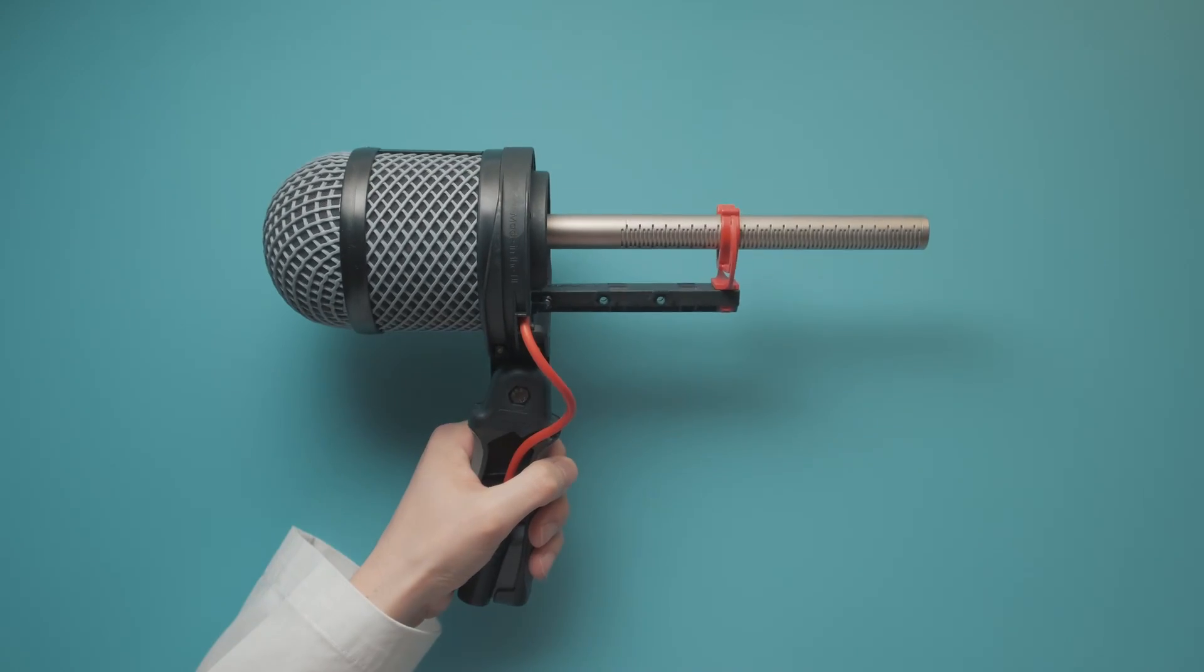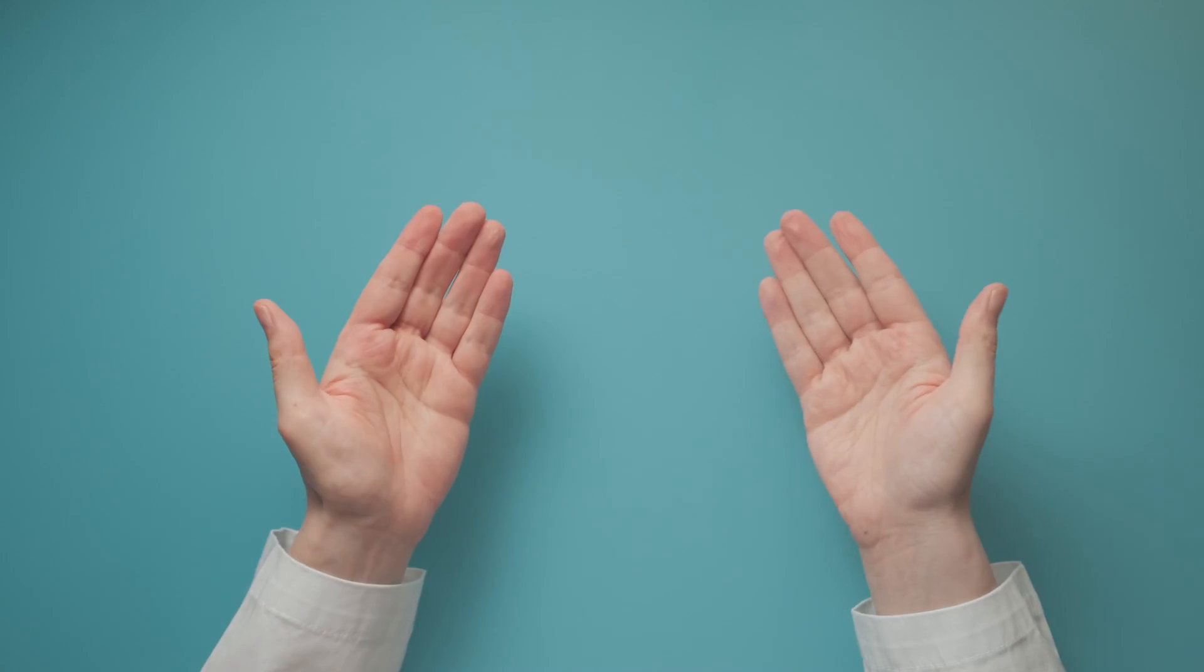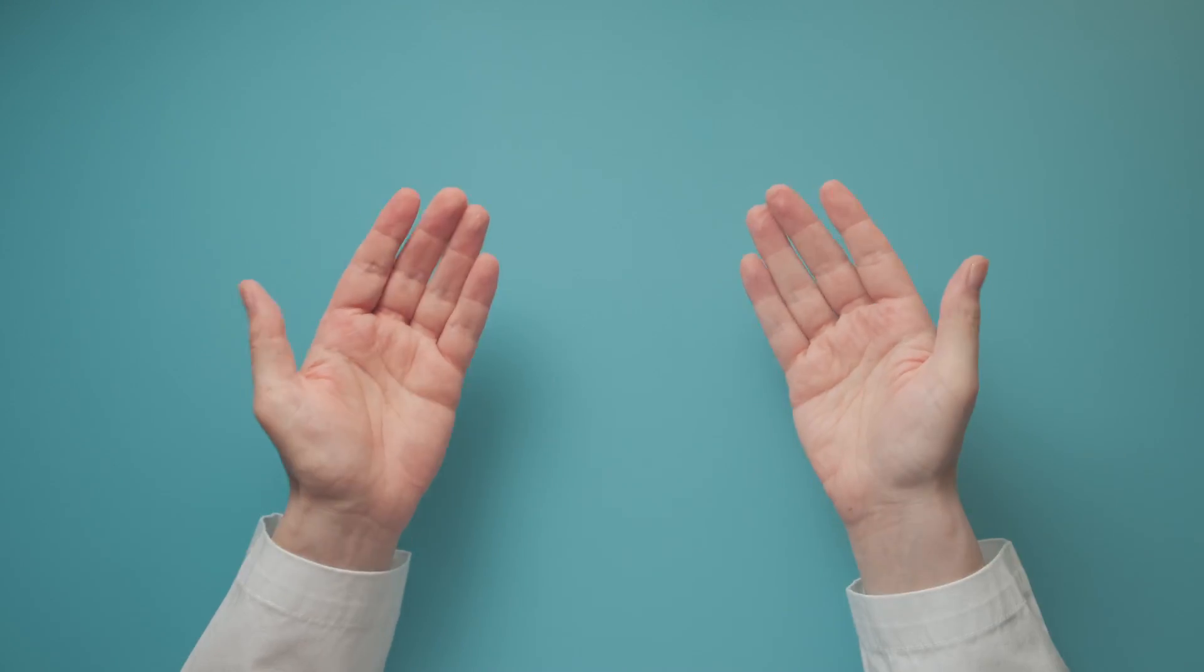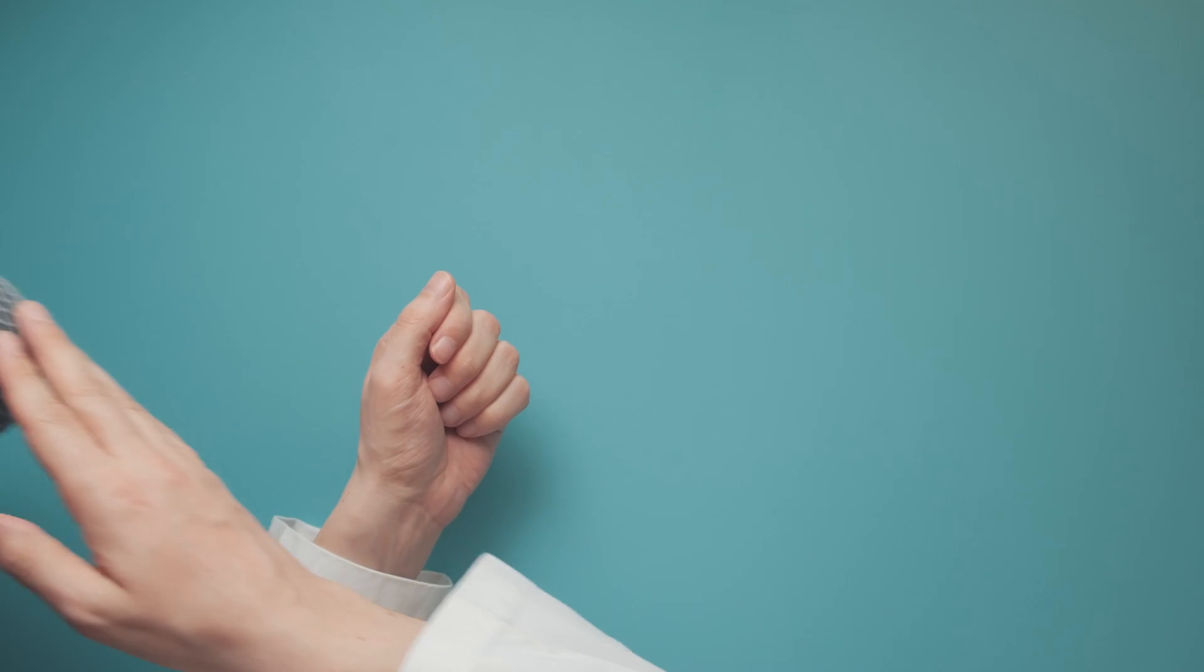When recording the actor's dialogue, a shotgun microphone is usually mounted onto a long boom pole. And a dedicated boom operator has to make sure that the mic is always pointed directly at the person speaking and that it never accidentally dips into the shot.